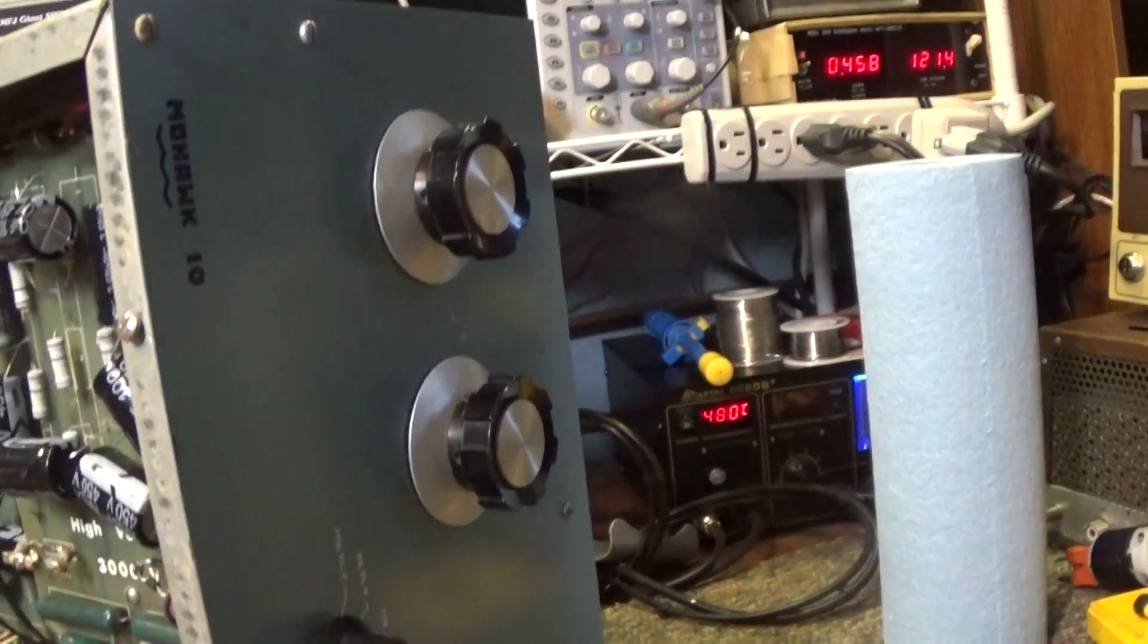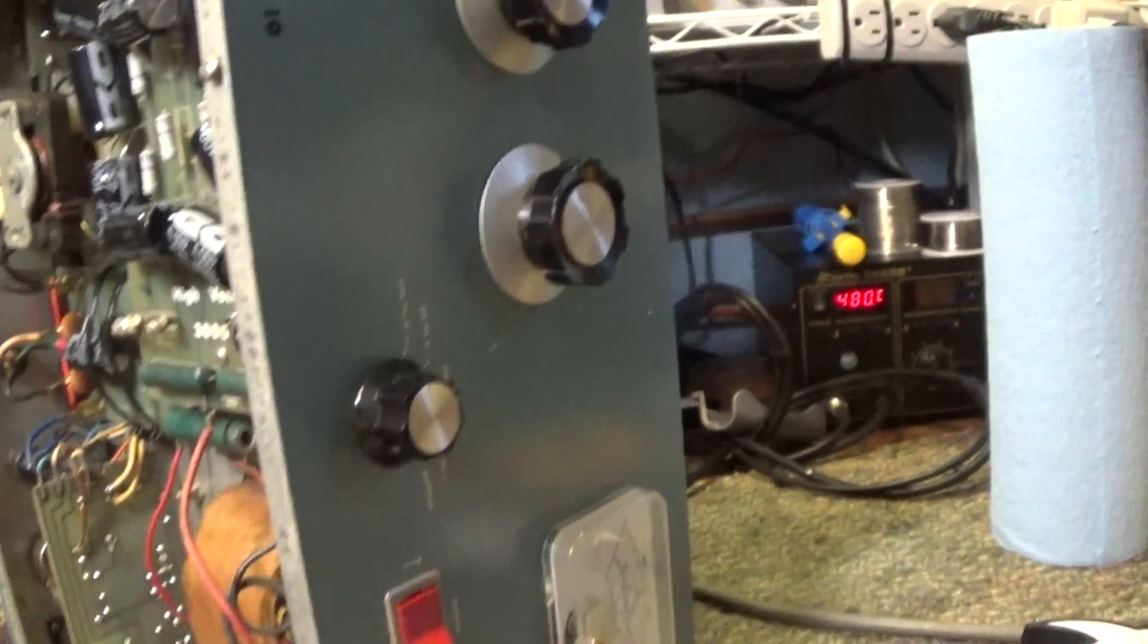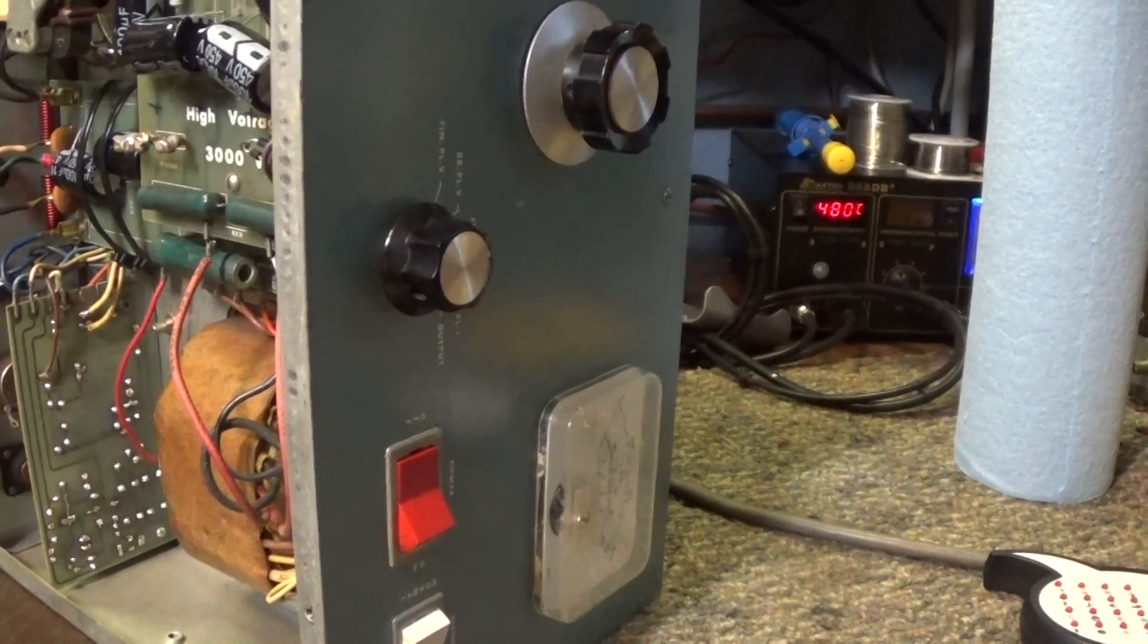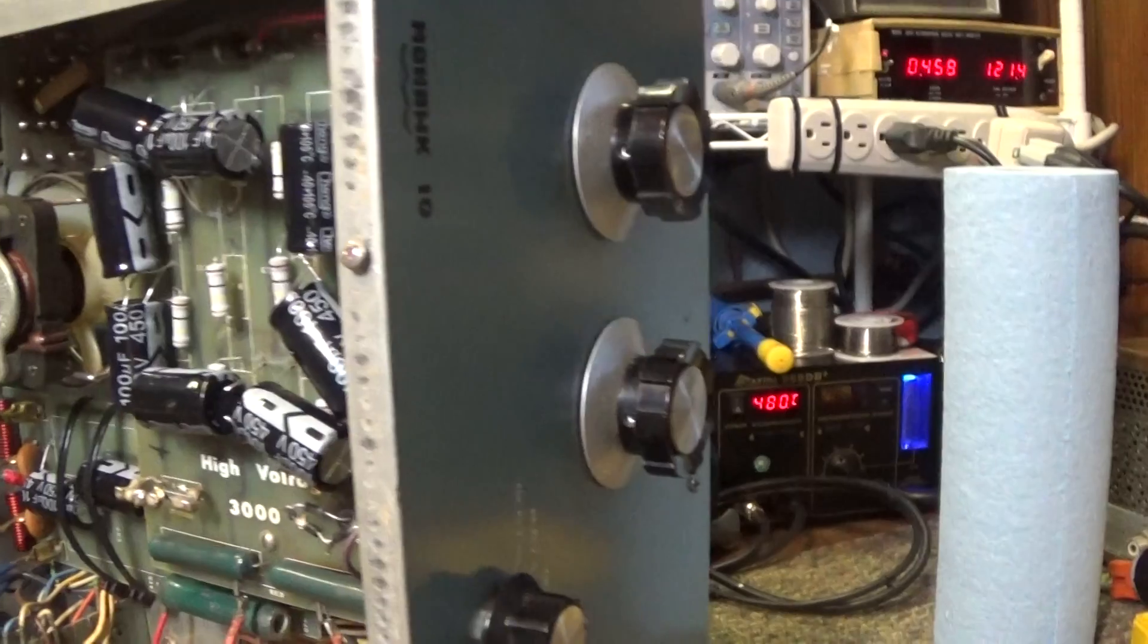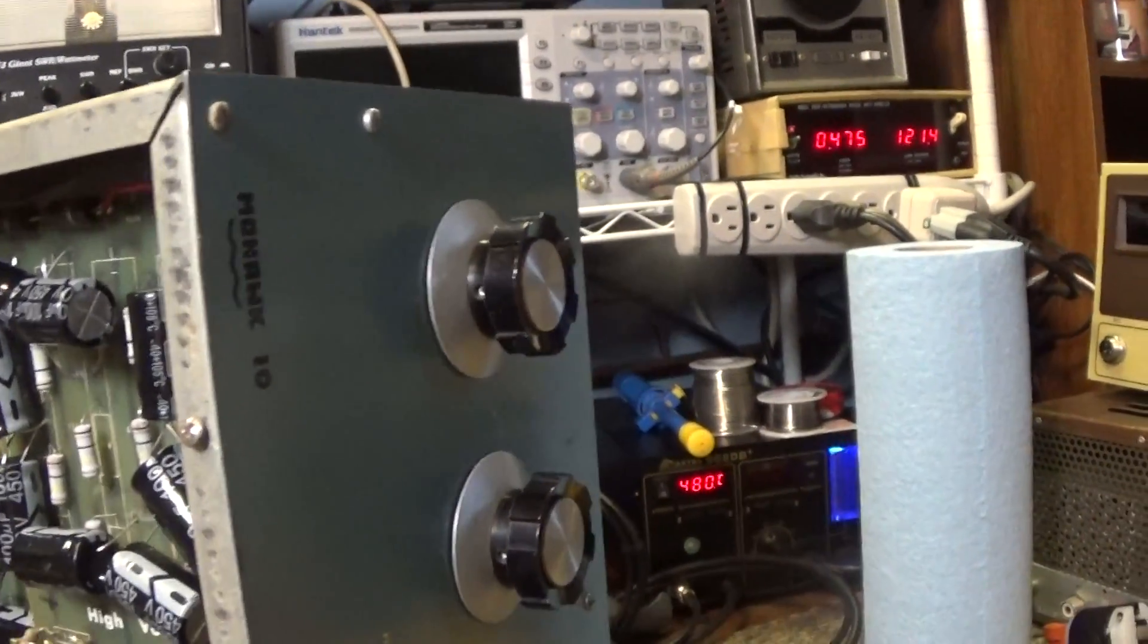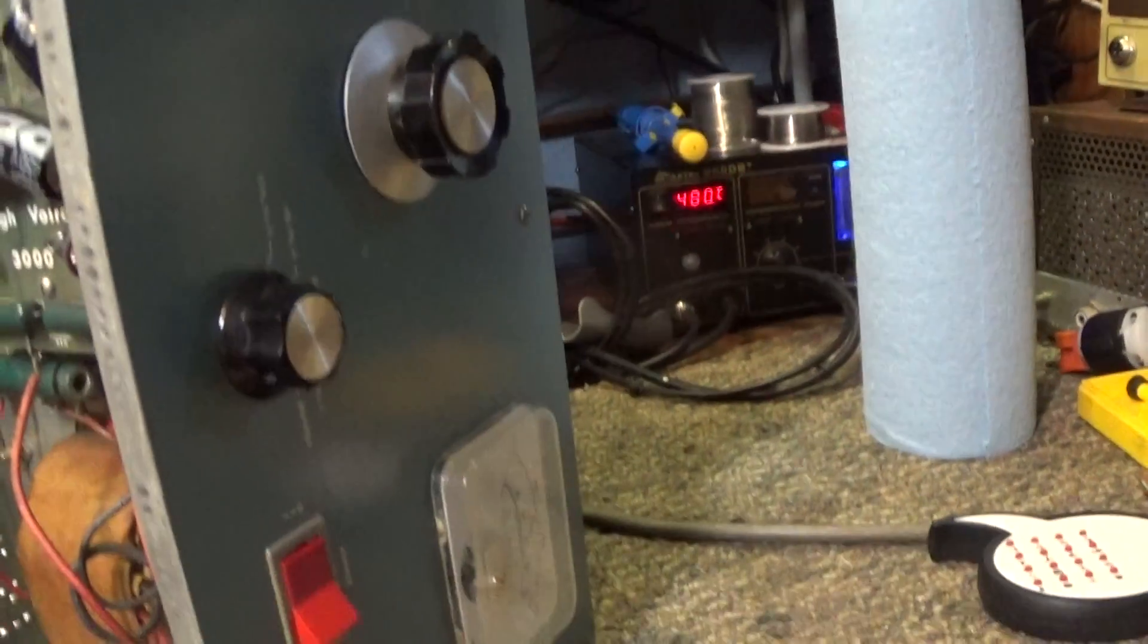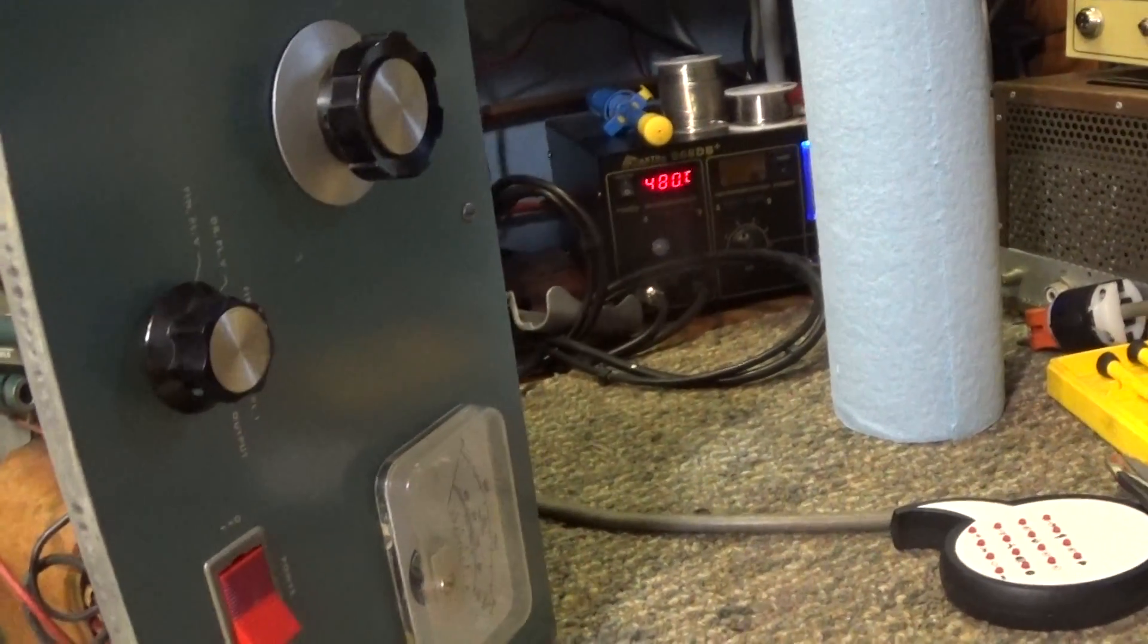Okay, today we're going to do a video of another toy I picked up, the Mohawk 10-2 tube linear amplifier. It uses two 470 or 572B tubes. This one does have the driver, a 6146B driver tube driving two 572B tubes.